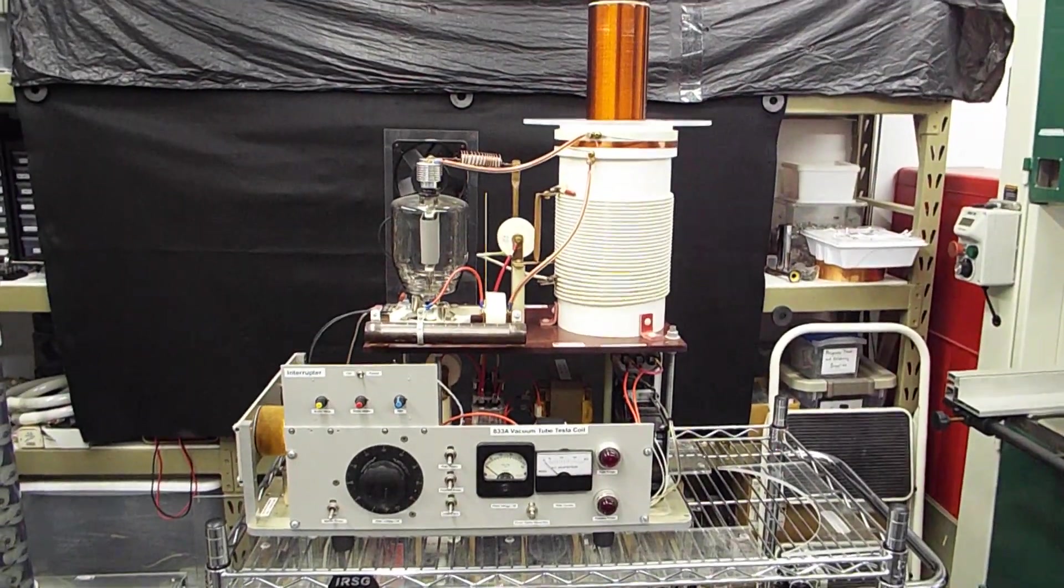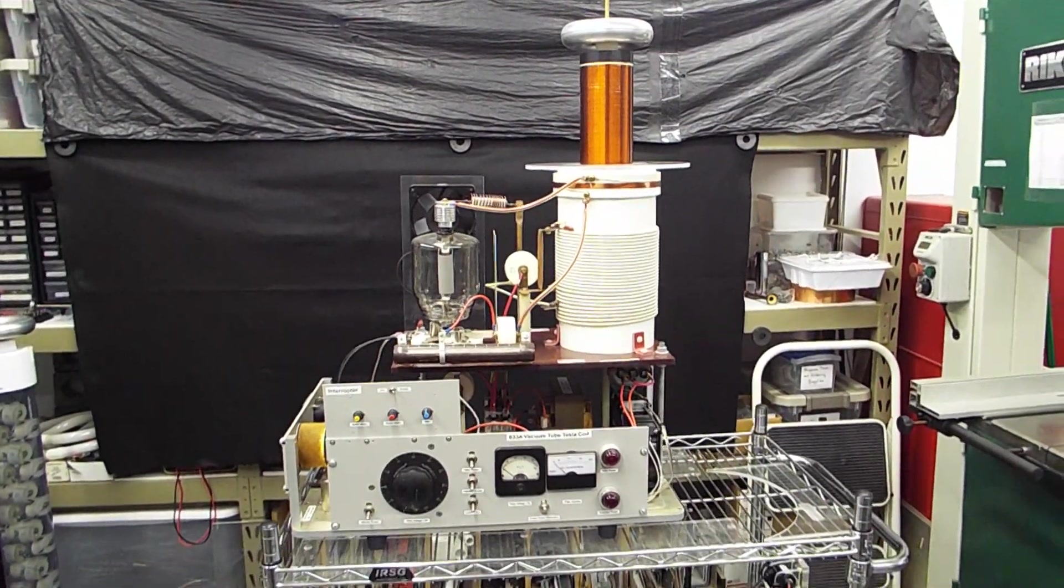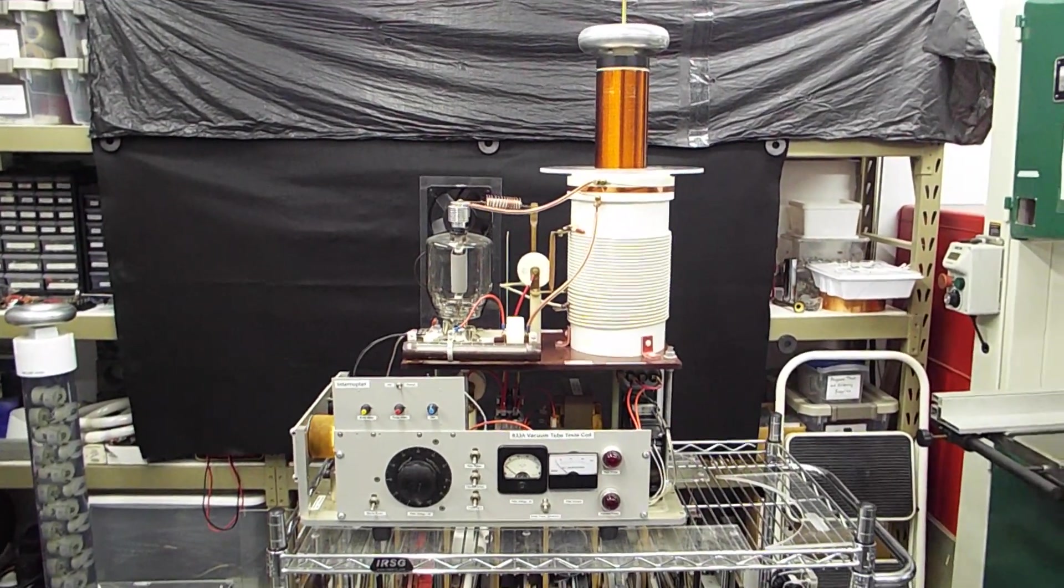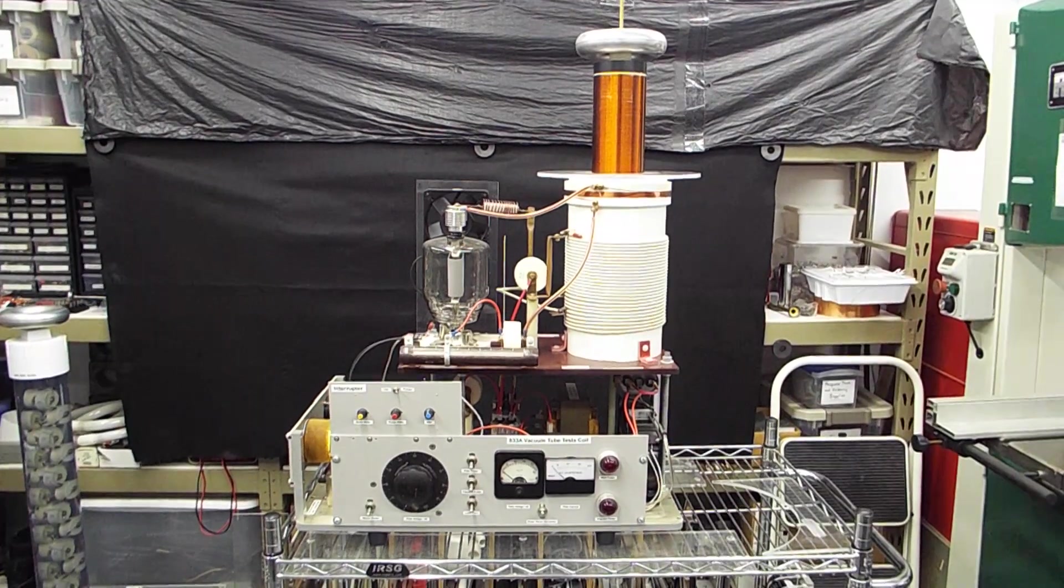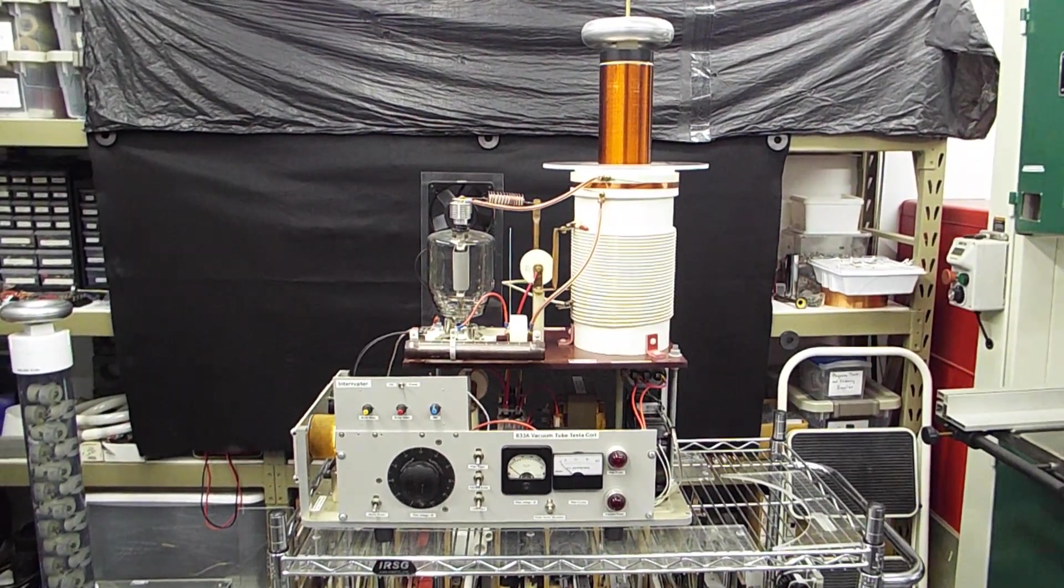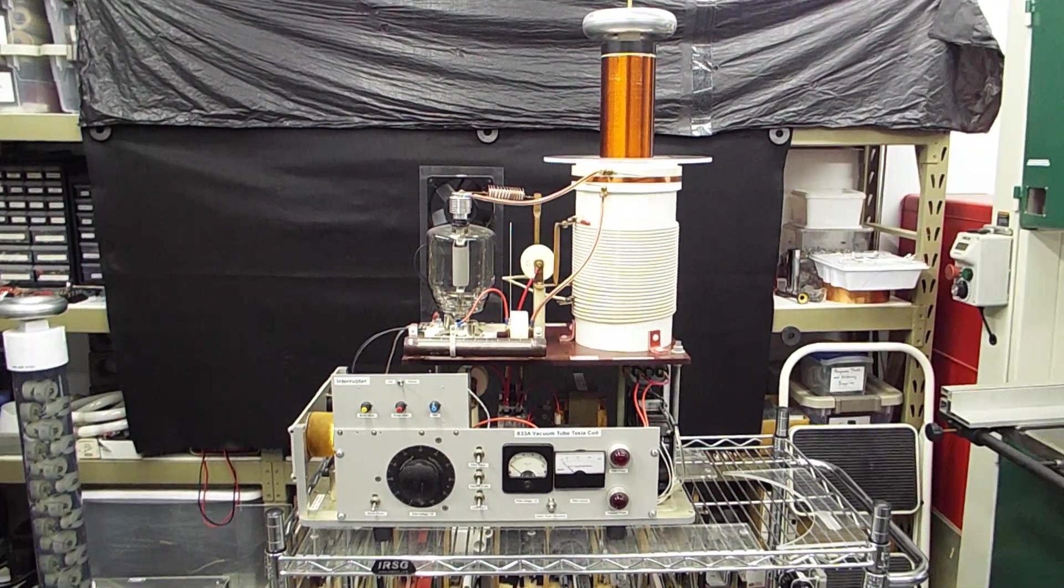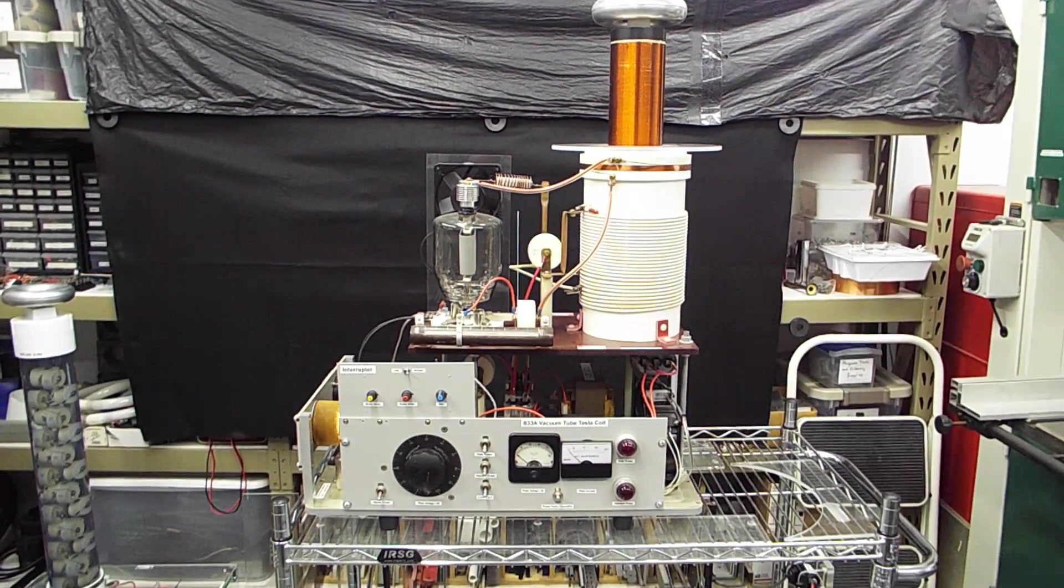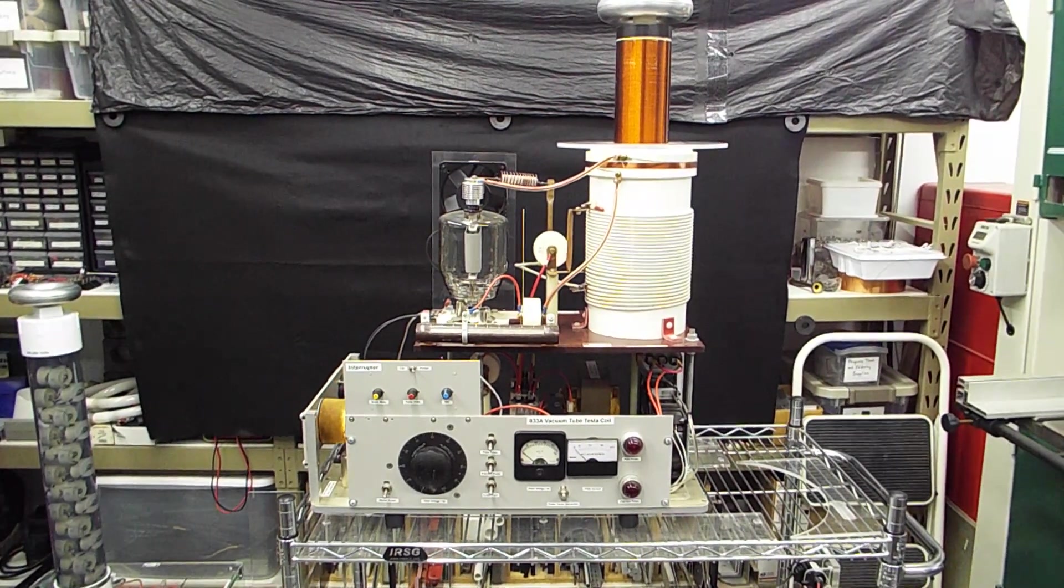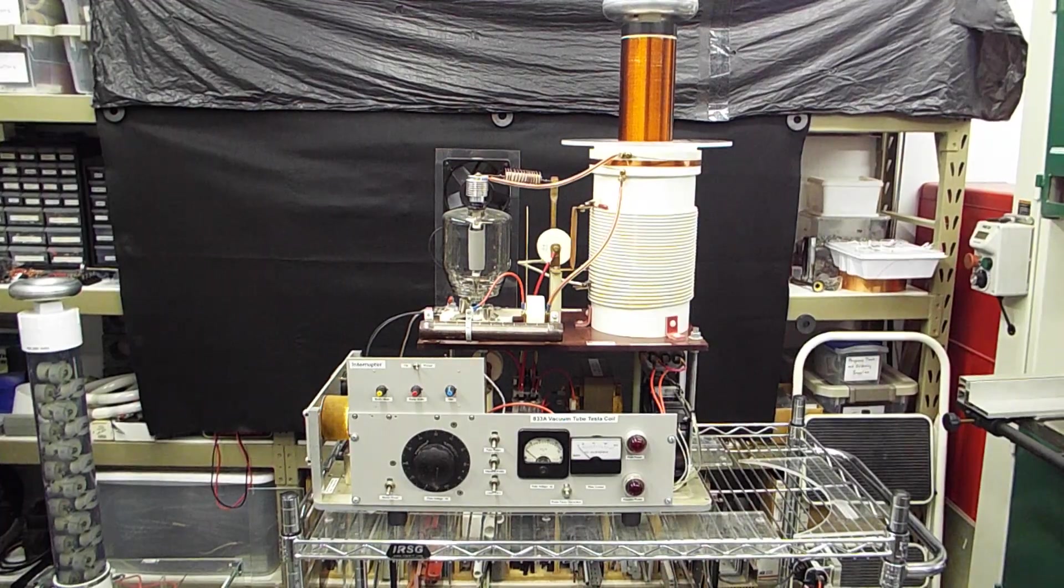This is an overview of my 833C vacuum tube Tesla coil. It's actually a revision of an overview I did earlier on my 833A coil. This is the same vacuum tube Tesla coil. The only difference is I'm using an 833C tube instead of an 833A, and I'm going into more detail on this video.